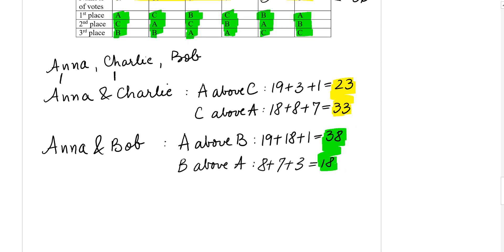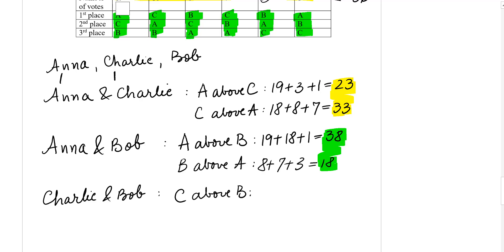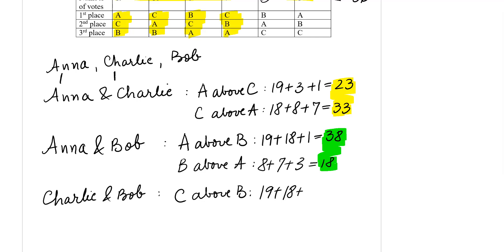We have now compared Anna with Charlie and Anna with Bob. The remaining comparison is Charlie versus Bob. Looking at where Charlie is above Bob in the table: first column — 19 points; second column — 18 points; then Charlie is above Bob in another column giving 7 points. Adding these up: 19 + 18 + 7 = 44 points for Charlie.